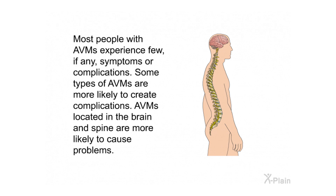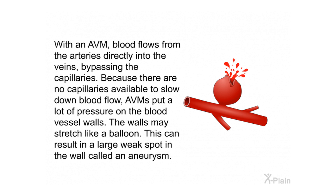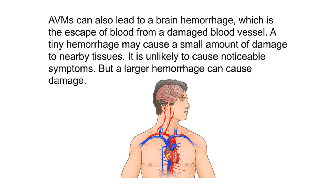Most people with AVMs experience few if any symptoms or complications. AVMs located in the brain and spine are more likely to cause problems. With an AVM, blood flows from the arteries directly into the veins, bypassing the capillaries. Because there are no capillaries to slow down blood flow, AVMs put a lot of pressure on the blood vessel walls. The walls may stretch like a balloon, resulting in a large weak spot called an aneurysm.